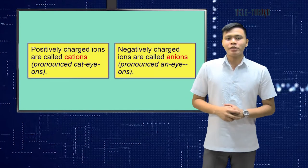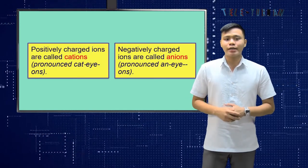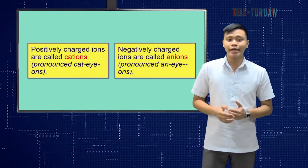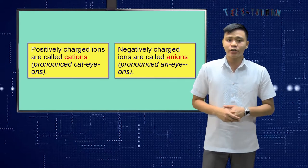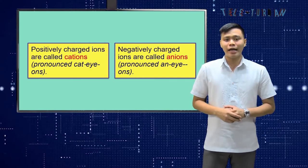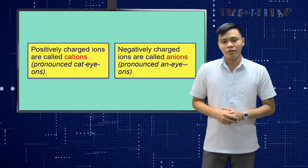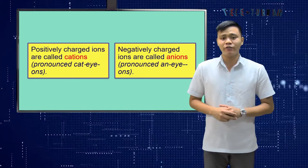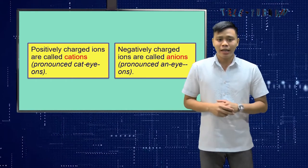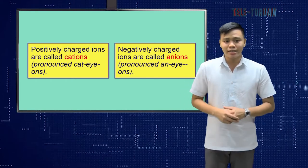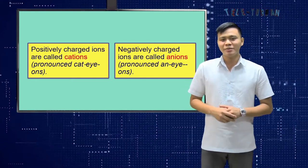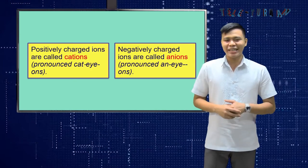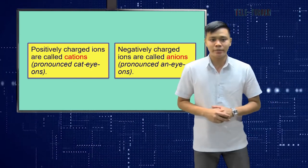Positively charged ions are called cations, while negatively charged ions are called anions. For us to understand more about the formation of ions, let us discuss valence electrons, electronegativity, and ionization energy.